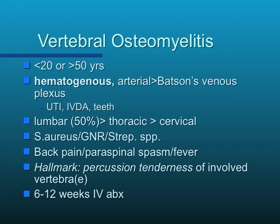Vertebral osteomyelitis occurs in children and teens or elderly individuals over 50. It usually comes from either the arterial side or Batson's venous plexus from below, related to UTIs. It usually occurs in the lumbar area, followed by thoracic and cervical — you don't see very much primary cervical discitis. Lumbar has more abnormal bone and more arthritis. Again, Staph aureus, but don't forget gram negatives and Strep species.